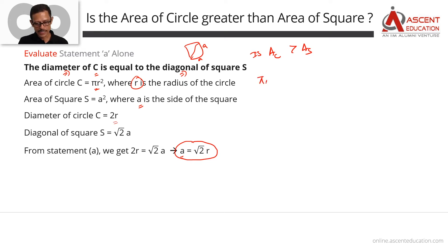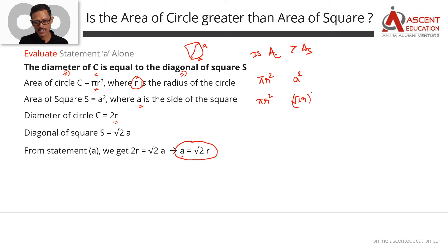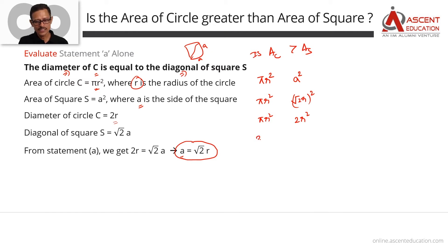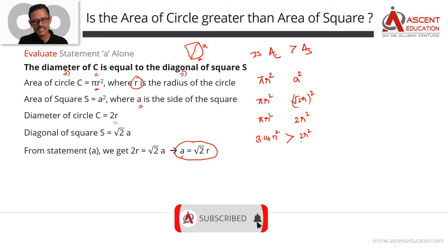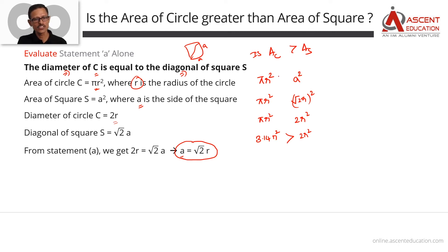The area of the circle is πr². Is it greater than the area of the square, which is a²? Substituting a = √2·r, the area of the square becomes (√2·r)² = 2r². Now comparing: π ≈ 3.14, so the circle area is 3.14r² and the square area is 2r². Since 3.14 times something is definitely greater than 2 times the same thing, the area of the circle is greater than the area of the square.